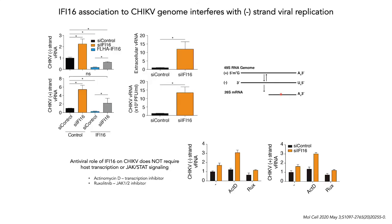We found that knockdown of IFI16 increased minus and plus strand replication, whereas overexpressing IFI16 reduced the levels of both. The knockdown effects can also be seen as an increase in extracellular viral RNA levels and viral titer. Providing exogenous IFI16 can rescue the knockdown effects of endogenous IFI16. Importantly, the antiviral effects are independent of IFI16's previously reported role as an interferon-sensitive transcriptional cofactor, since treatment with actinomycin D or ruxolitinib did not completely abolish the knockdown effects.